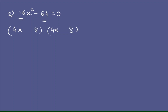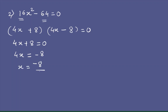Since there is minus 64, we add a plus sign to one 8 and a minus sign to the other 8, giving (4x + 8)(4x - 8) = 0. Taking 4x + 8 = 0 gives 4x = -8, and dividing by 4 gives x = -2.